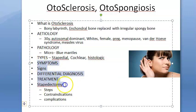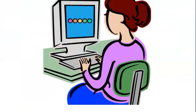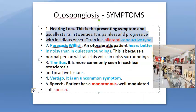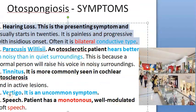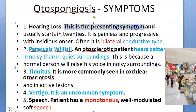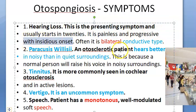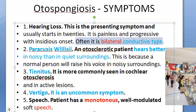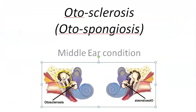Now let's look at symptoms. These patients present with hearing loss — primarily conductive hearing loss, with possible sensorineural component. It begins in the 20s, is painless and progressive, and importantly, it is often bilateral, affecting both ears.